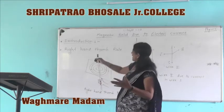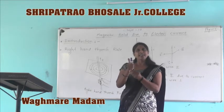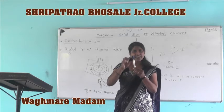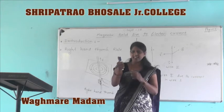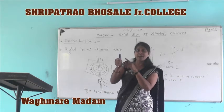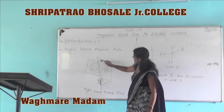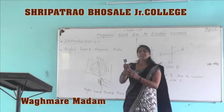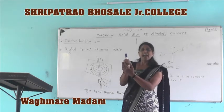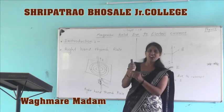To summarize the right-hand thumb rule: hold the current-carrying conductor in your right hand such that the thumb is pointed in the direction of current. This conductor is held in the right hand with the thumb stretched in the direction of current, and the curled fingers indicate the direction of the magnetic field produced around the conductor.